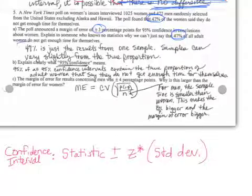Of course, that is because samples vary from sample to sample, and this 47% is just the results of one sample, and that is not necessarily the true proportion.